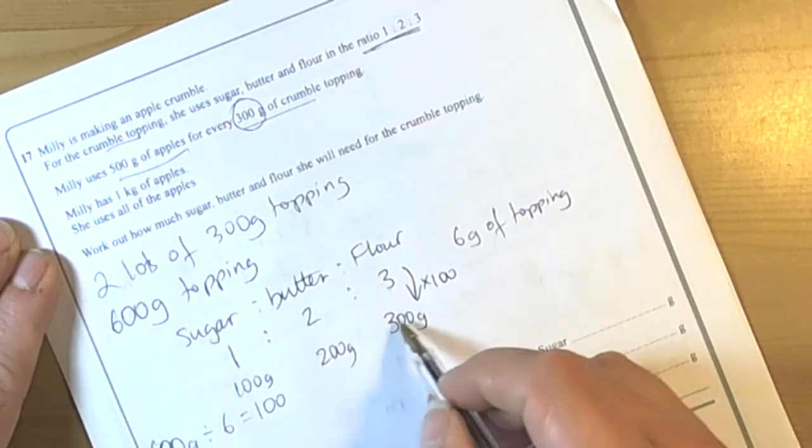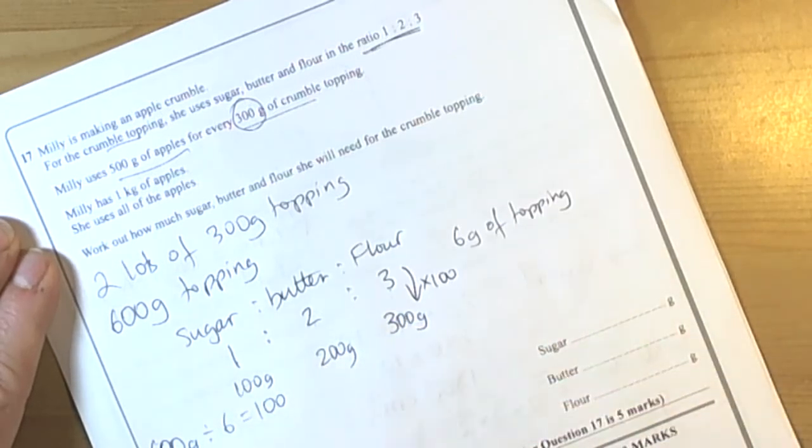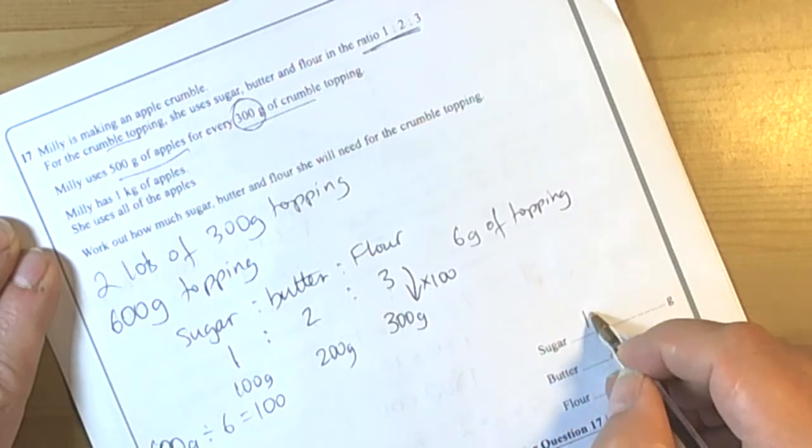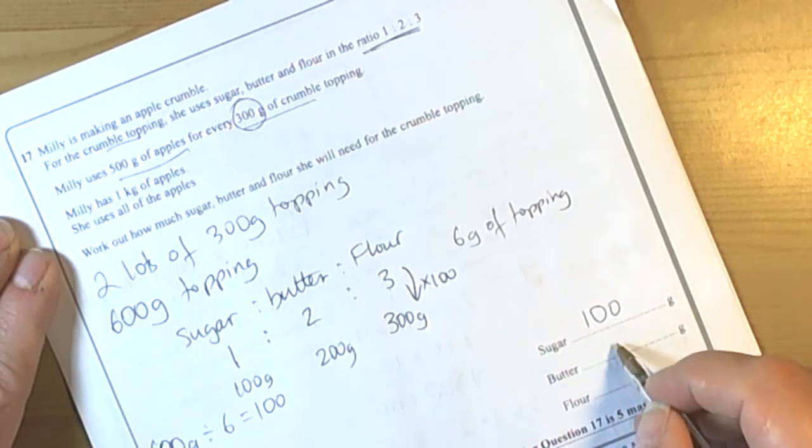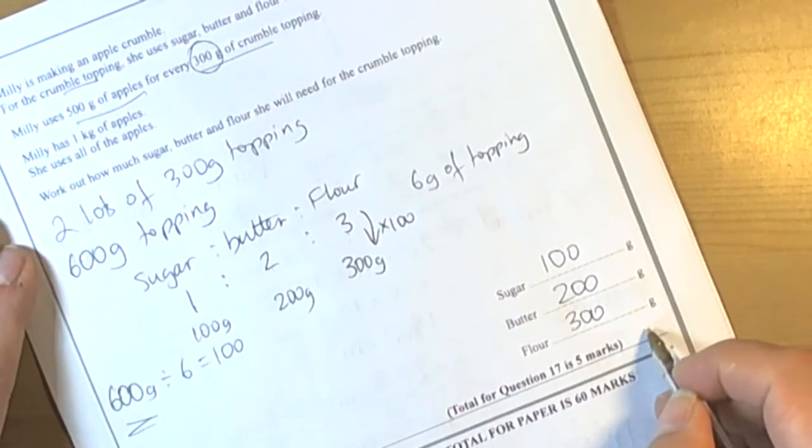Add those up to check it works: 300 plus 200 is 500, plus 100 is 600. So we have got our 600 grams of topping where we're going to need 100 grams of sugar, 200 grams of butter, and 300 grams of flour.